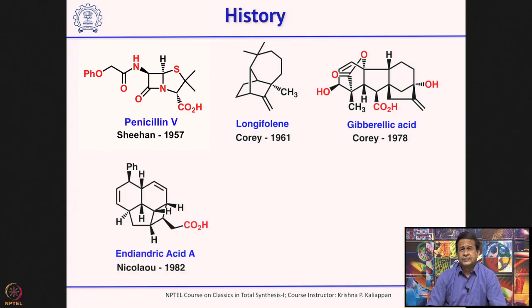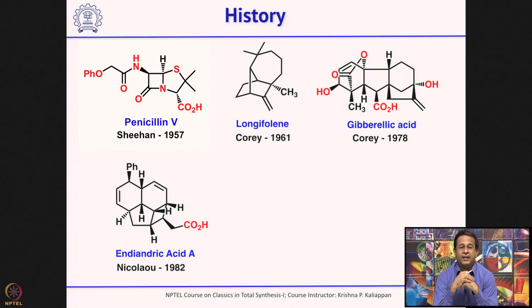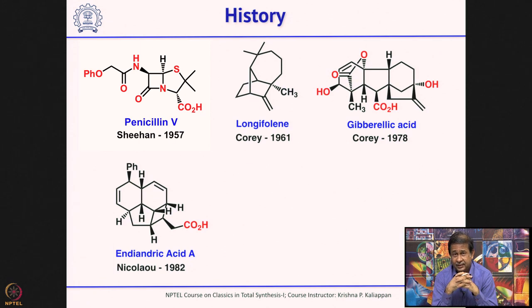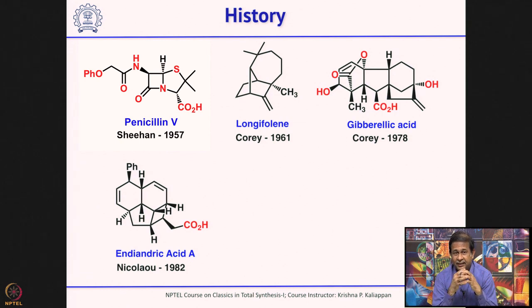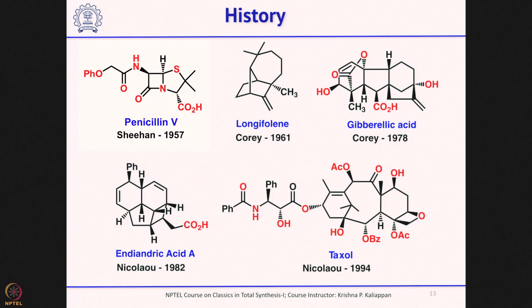Around the same time, Woodward made another big complex molecule, vitamin B12 — people never thought such a molecule could be made, but Woodward made it. Then in the 1980s, Nicolaou joined the top group of total synthesis chemistry, and his synthesis of endiandric acid is one of the classical biomimetic-type cyclizations. He used that cyclization to make four or five related endiandric acids using a very simple strategy. Ten or twelve years later, the famous anti-cancer drug Taxol got major attention; Nicolaou and Holton were the first to make this natural product, and since then there have been ten more total syntheses of Taxol.